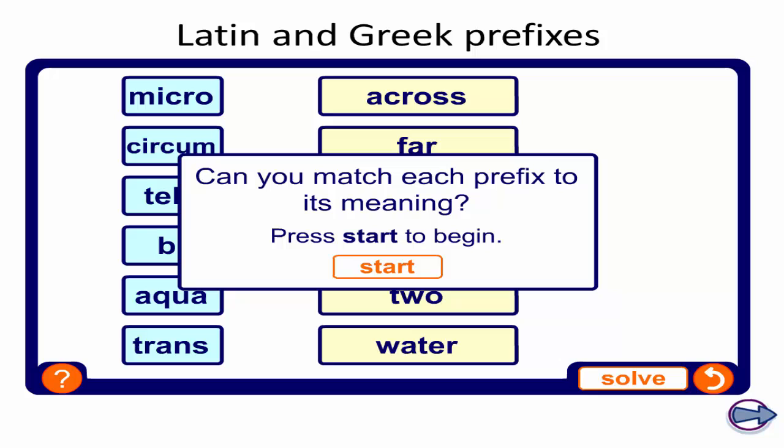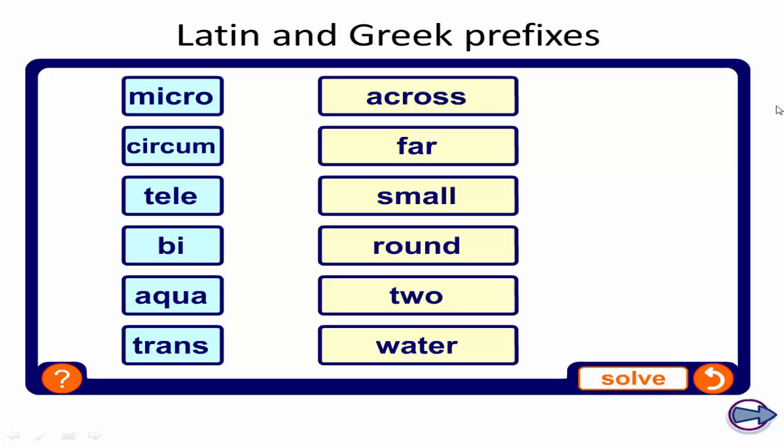Now let's have a quiz on some prefixes. Can you match each prefix to its meaning? Let's start together. Micro, what does micro mean? You're right, it means small. For example, we say microorganism. Circum, like circumference, it means round.